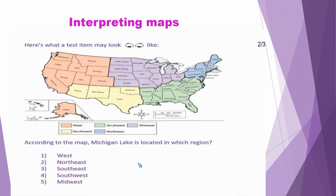Here's what a test item may look like. According to the map, Michigan Lake is located in which region? And here we have our five options: option 1, West; 2, Northeast; 3, Southeast; 4, Southwest; and 5, Midwest.